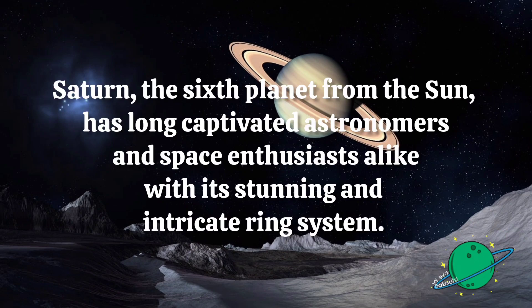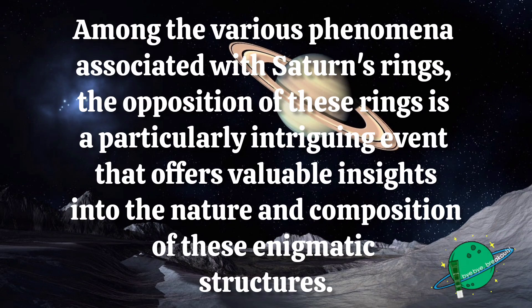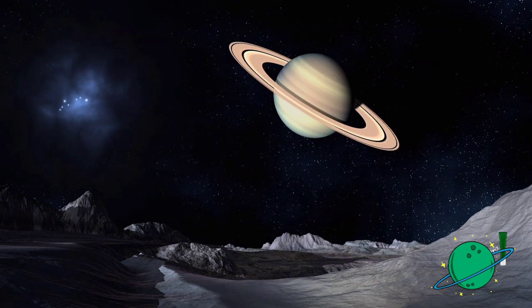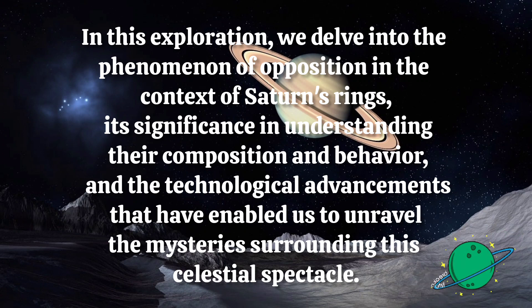Saturn, the sixth planet from the Sun, has long captivated astronomers and space enthusiasts alike with its stunning and intricate ring systems. Among the various phenomena associated with Saturn's rings, the opposition of these rings is a particularly intriguing event that offers valuable insights into the nature and composition of these enigmatic structures. In this exploration, we delve into the phenomenon of opposition in the context of Saturn's rings, its significance in understanding their composition and behaviour, and the technological advancements that have enabled us to unravel the mysteries surrounding these celestial spectacles.